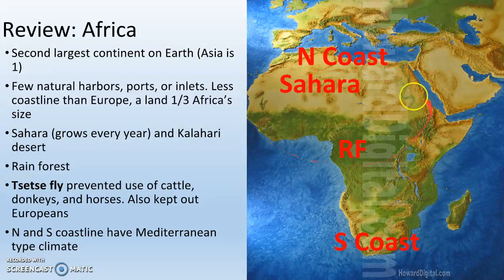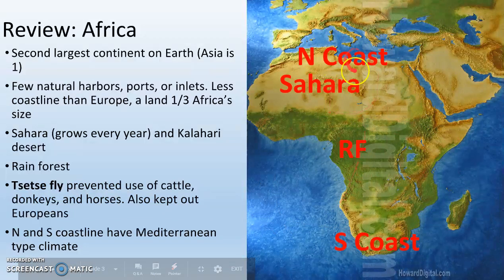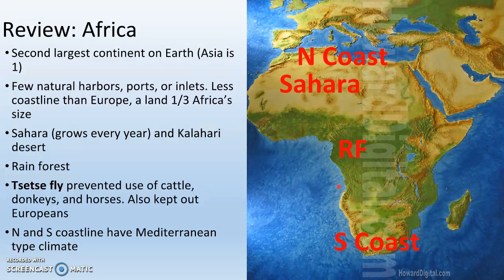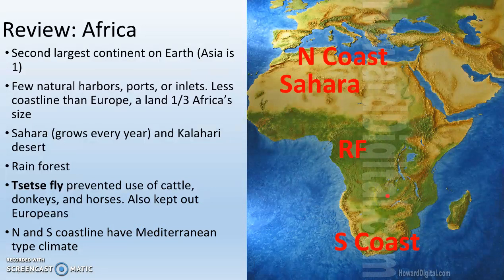In the north, we have the Sahara Desert, which actually grows every year. In the south, we have the Kalahari Desert, which is nearly as big as the Sahara. We've got rainforest down here, and we've got the tsetse fly. The tsetse fly is an insect that lives in sub-Saharan Africa. It carries a disease that basically kills horses, cows, and donkeys. As a result, people down here aren't going to have those animals. It's also going to keep out Europeans because it carries diseases like malaria. So Europeans are not going to come into Africa until really the late 1800s, early 1900s, once medications are created that can stop malaria.